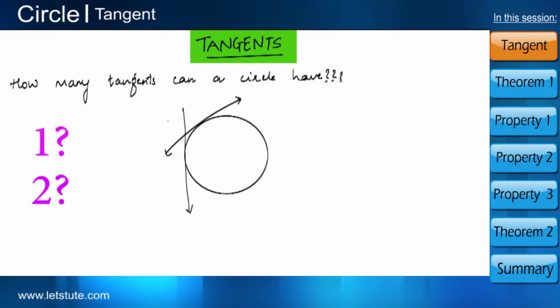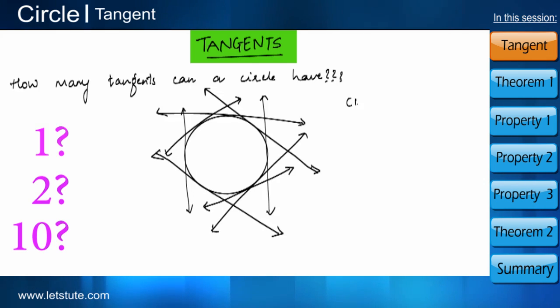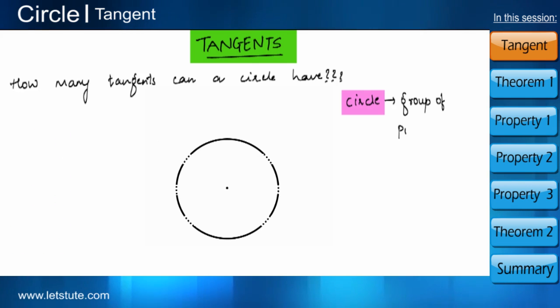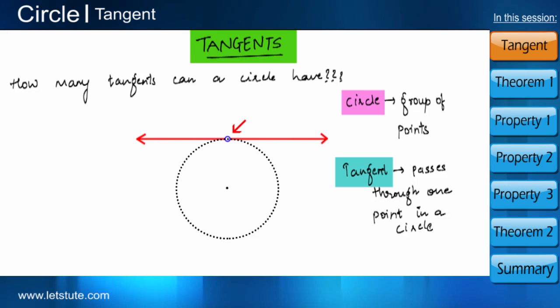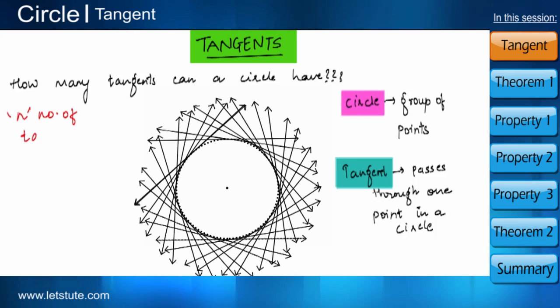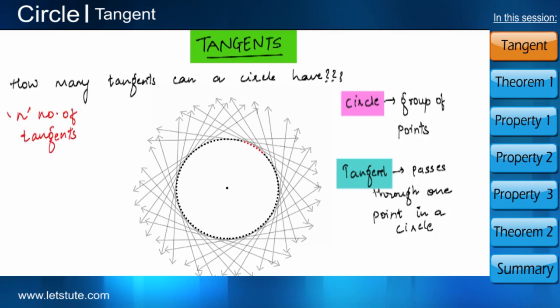One, two, ten? A circle is made up of group of points and as we have studied that a tangent passes only through one point. So, a circle can have n number of tangents because it has n number of points. From this, we can say that a circle can have infinite number of tangents.